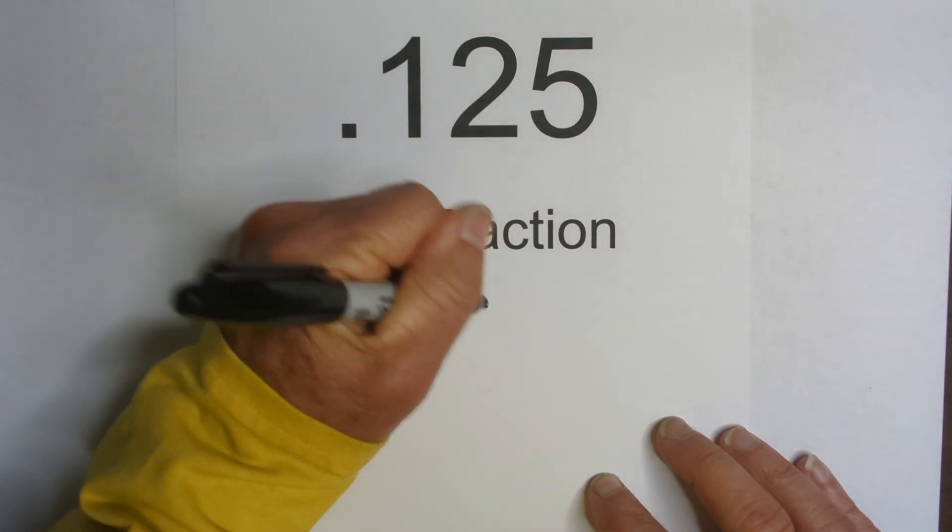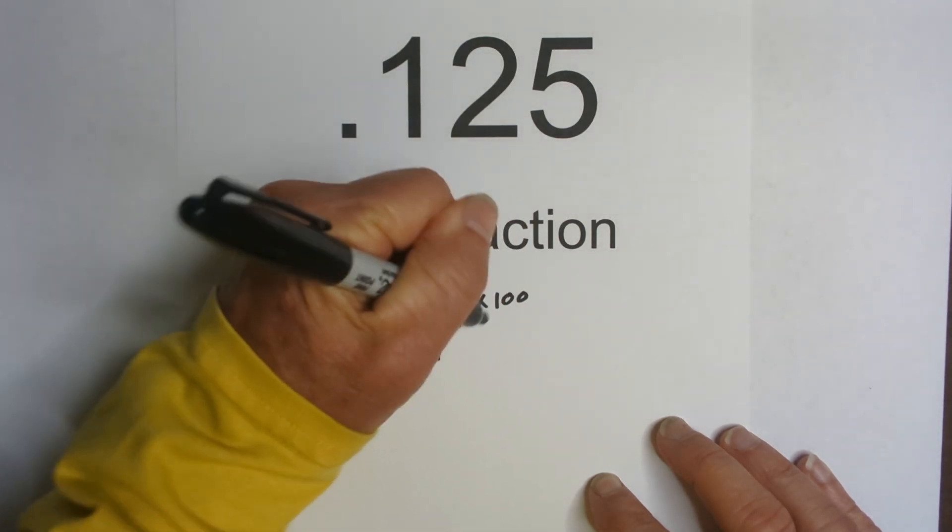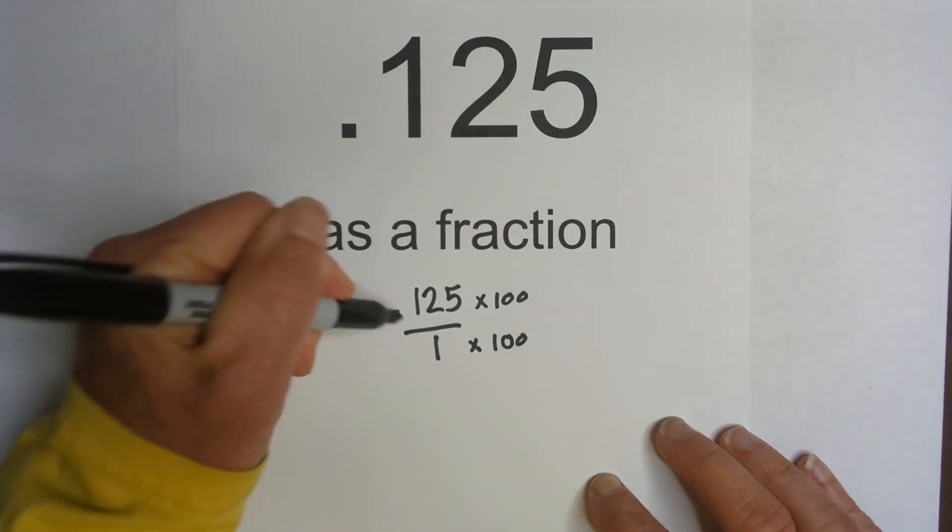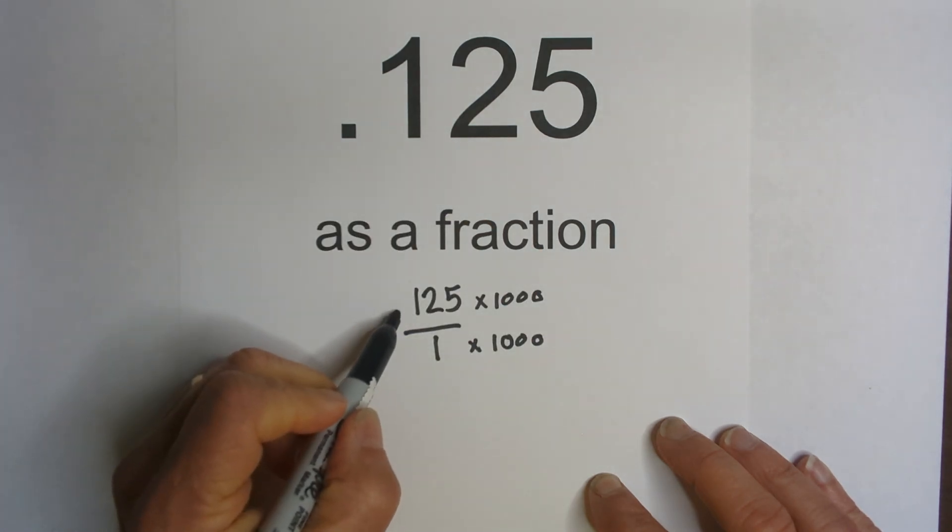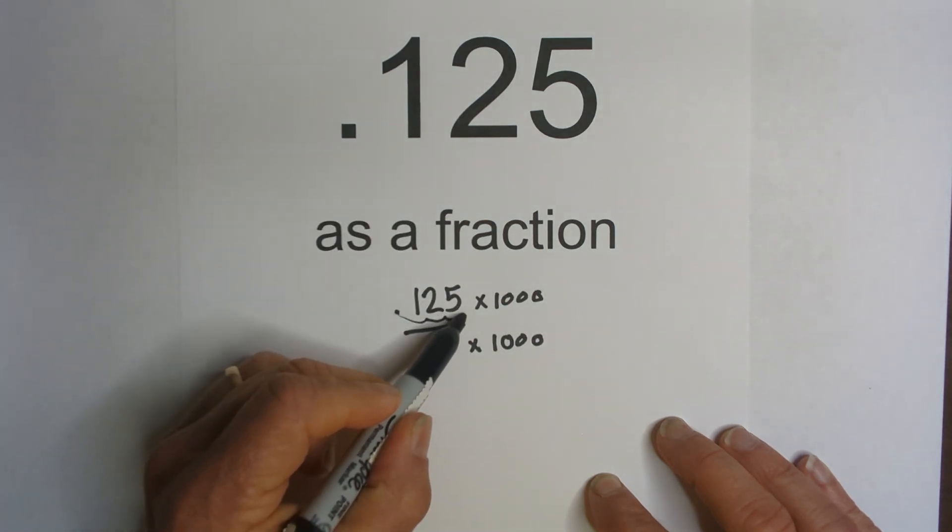And I can do that by multiplying the numerator and the denominator by 1,000 because I need to move the decimal 1, 2, 3 places.